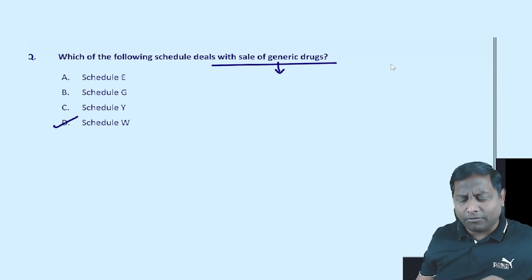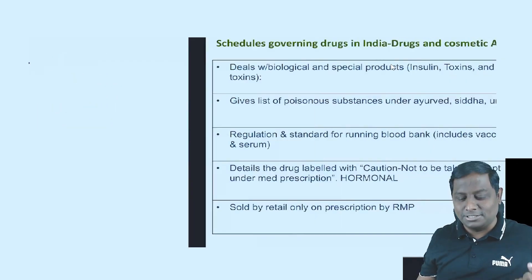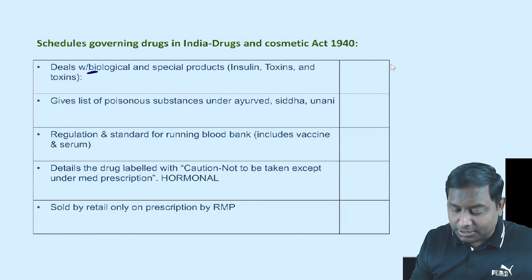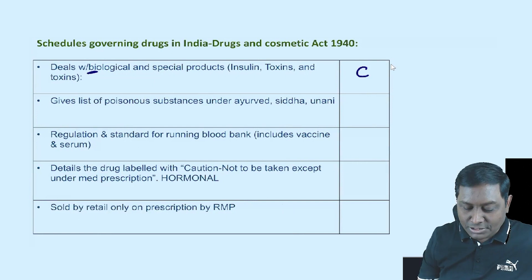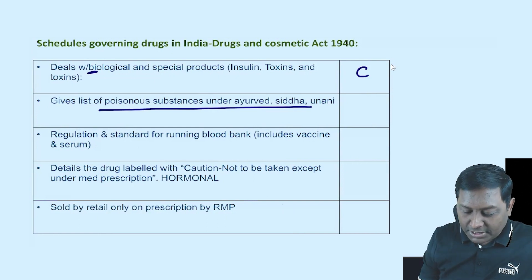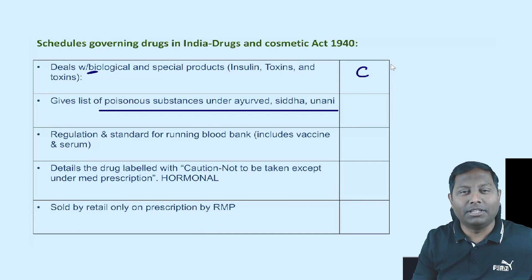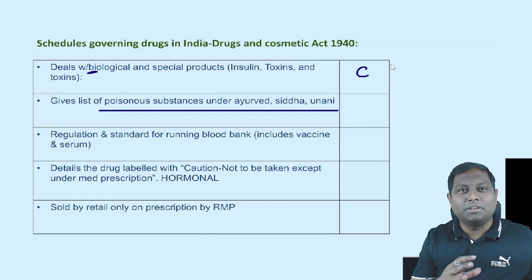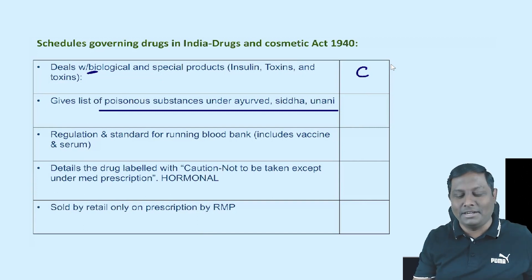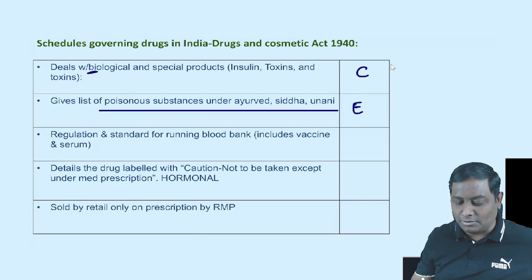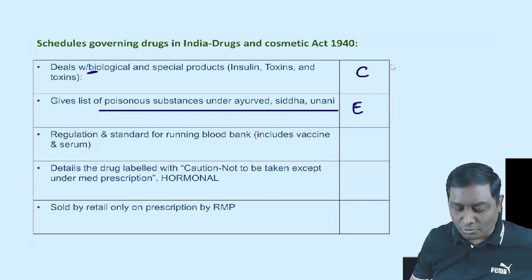The correct answer is Schedule W. Schedule C deals with biological and special products — 'B' for biological. The list of poisonous substances under Siddha, Unani, and Ayurveda comes under another schedule. Anything bitter from Ayurvedic drugs brings 'E' from your mouth — that's your mnemonic for Schedule E.